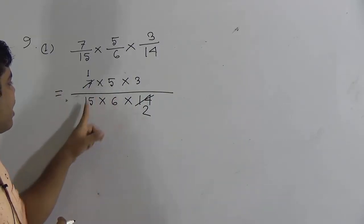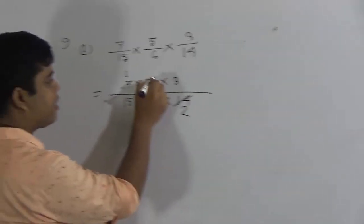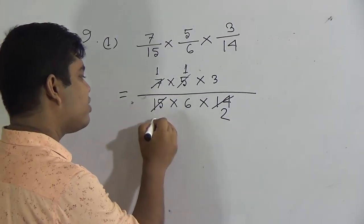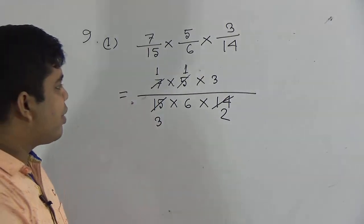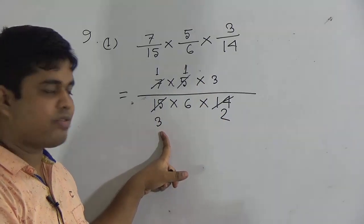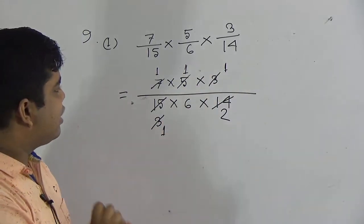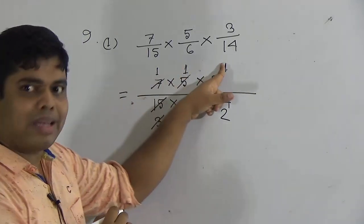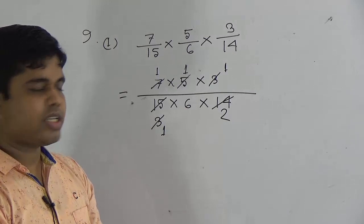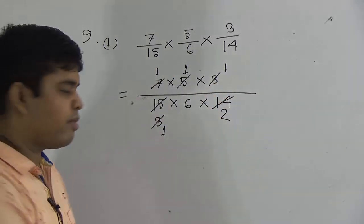Now notice 5 and 15 — both numbers are divisible by 5. If we divide 5 by 5, we get 1. If we divide 15 by 5, we get 3. Now here notice 3 and 3 — both numbers are divisible by 3, giving 1 and 1. So as numerators, 1, 1, 1 are left, and as denominators, 1, 6, and 2 are left. We multiply all numerators and all denominators.